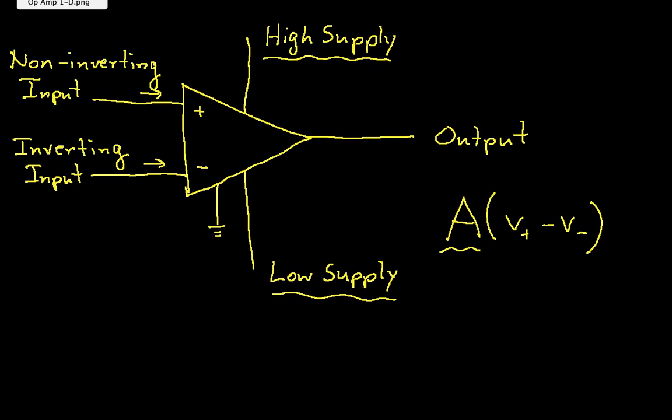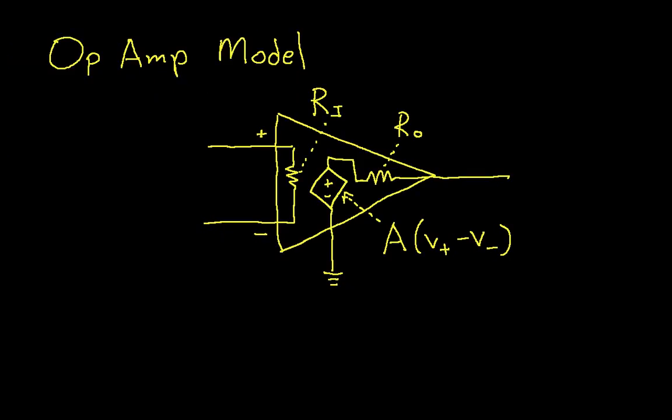A more detailed model of an op-amp is the following. The plus sign, this guy here is the non-inverting input. This is the inverting input. They're connected together by a resistor, and the resistor is called the input resistance.